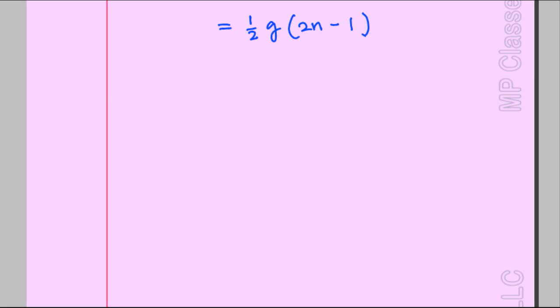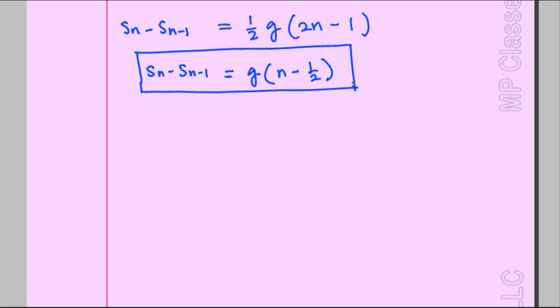Copying the expression derived so far: the required distance Sn − S_{n-1} equals ½g times (2n − 1), which simplifies to g(n − ½). I put this in a box as Answer 1. The second part of the question involves the 35-meter condition.